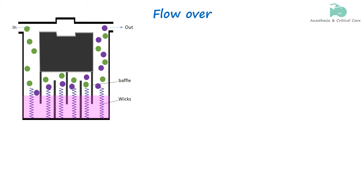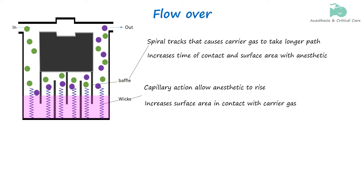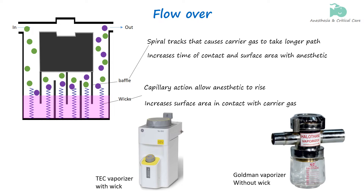The vaporizer incorporates wicks made of porous material that extend into the liquid anesthetic. Due to capillary action, the liquid anesthetic rises into these wicks, significantly increasing the surface area of the liquid exposed to the carrier gas. This enhanced surface area improves the efficiency of vaporization, allowing more molecules of the anesthetic to escape into the gas phase. The design often includes baffles or spiral tracks that direct the flow of carrier gas, lengthening the pathway over the liquid anesthetic and further enhancing vaporization efficiency. The TEC vaporizer uses a wick system for consistent anesthetic delivery.